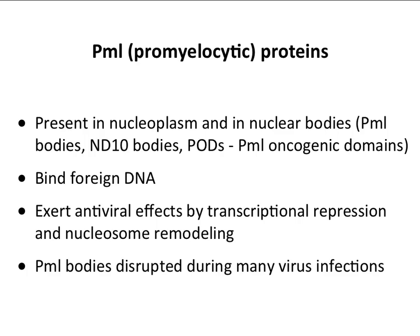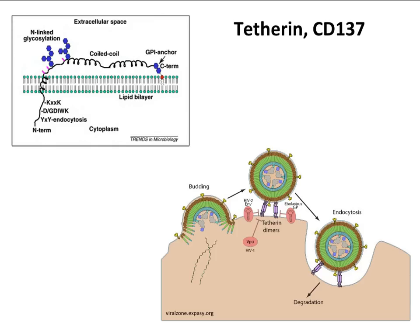PML proteins — promyelocytic leukemia proteins — are also interesting ISGs that Dr. Silverstein will tell you more about. These are present in the nucleus in specific bodies called PML bodies, ND10s, or PODs. What they do is bind DNA and repress it transcriptionally — they remodel nucleosomes and affect histone acetylation levels. They basically inhibit viruses that must transcribe mRNAs in the nucleus from DNA templates, and as you might guess, many viruses have evolved ways to overcome this as well.